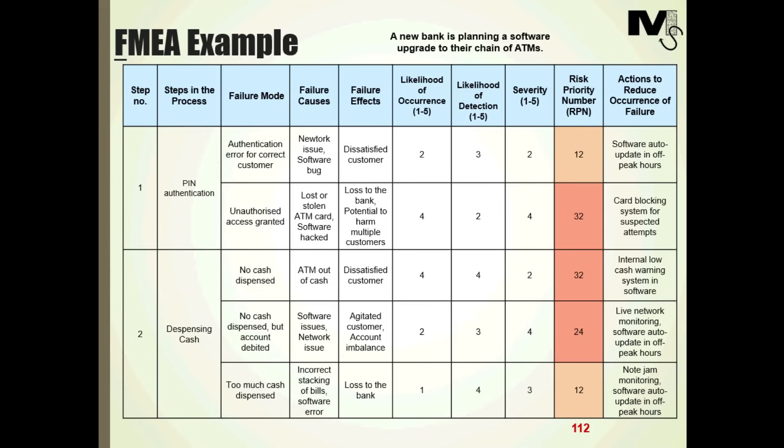For our example, let's assume that a relatively new bank is planning a software upgrade to their chain of ATMs. They want to run a FMEA to understand the potential failures that could result from the upgrade and prepare contingency plans. The steps outlined by the team are pin authentication and cash dispensation. Now normally you'd have more services in an ATM like a pin change, unlock, balance etc. But we're only looking at these two steps for simplicity in this example. The failure modes identified are in expected lines.